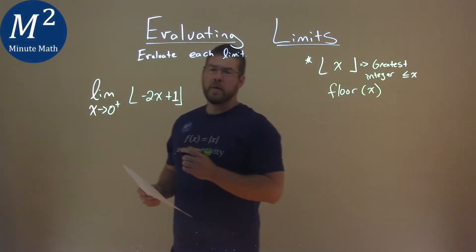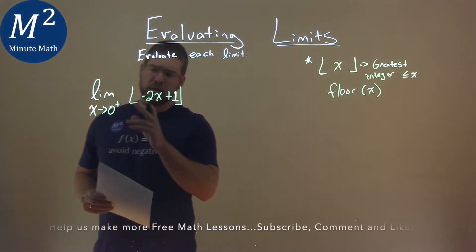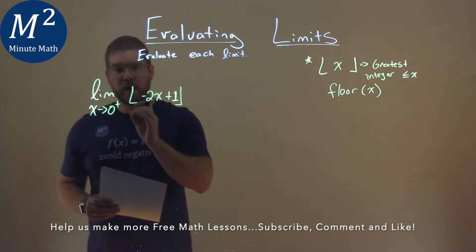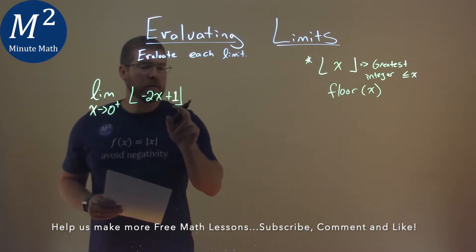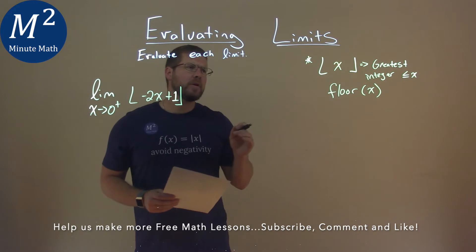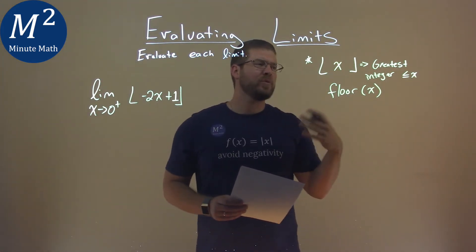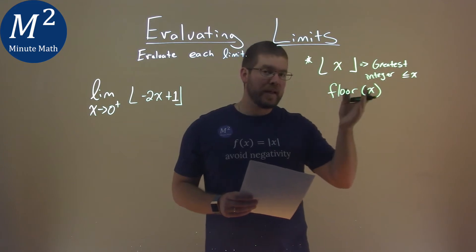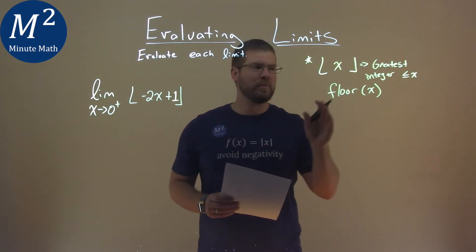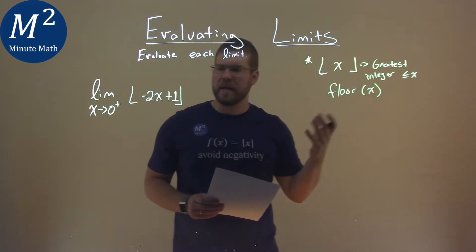We're given this limit right here and it's a tricky one. The limit as x approaches zero from the right of the floor of negative two x plus one. And the floor, so the floor you'll see is that symbol, we take the floor of x is really the greatest integer less than or equal to x. And we'll see it as like the floor of x, that's how you pronounce it.